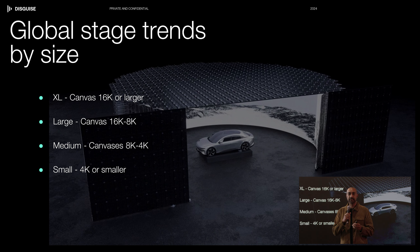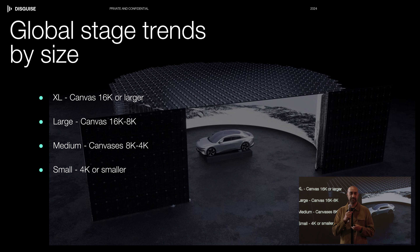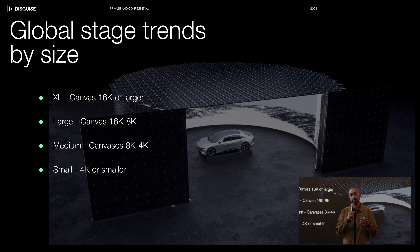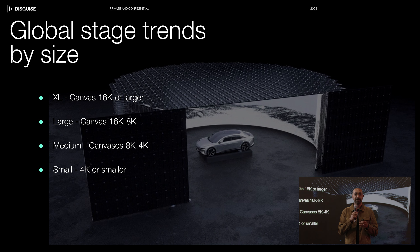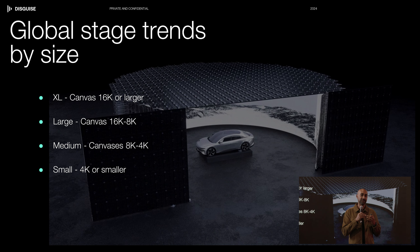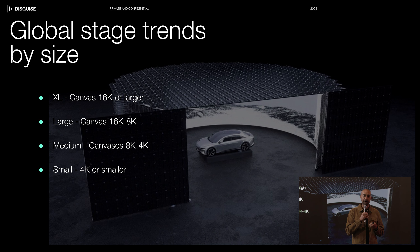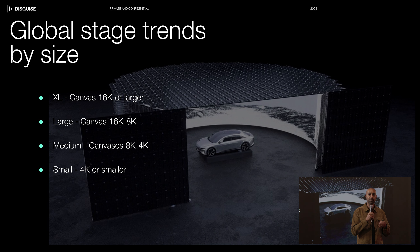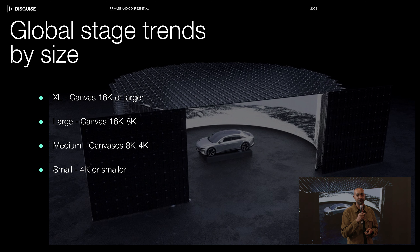Where we're seeing a slowdown is in the extra-large and some of the large stages, because only the most expensive productions can afford to utilize those — the world doesn't need that many of them. However, there are tons more small, medium, and even smaller-large stages that the world needs. If you could imagine a pyramid, the bottom half of the pyramid is where all of the growth will be coming from in VP 2.0.